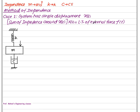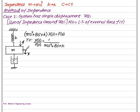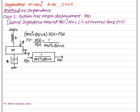Consider a system with spring constant k, mass m, and damper c. Applying the force, two variables are required for k — one fixed at zero and the other x — and mass requires one variable x. According to this definition, the sum of impedances around x gives: impedance of m is ms², impedance of c (or b) is bs, and impedance of k is k. So (ms² + bs + k) × X(s) = F(s). The transfer function is X(s)/F(s) = 1/(ms² + bs + k).